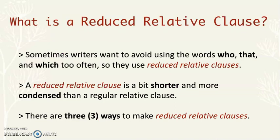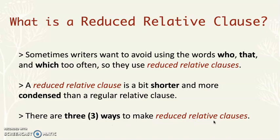So what is a reduced relative clause? If you look at the word 'reduced,' we know that it means to make something less or make it smaller. Sometimes writers want to avoid using the words who, that, and which too often, so they use reduced relative clauses. A reduced relative clause is a bit shorter and more condensed than a regular relative clause. There are three ways to make reduced relative clauses.